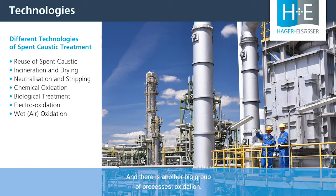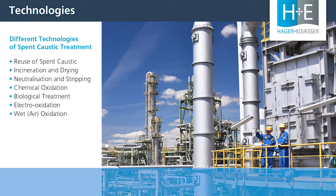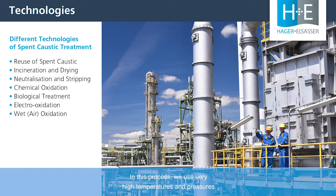Often, oxidation is still needed at the end to achieve a sufficiently good effluent quality. Another option is incineration, but this is only economically feasible if you have very high COD concentrations in your spent caustic. Another big group of processes is oxidation, which aims to destroy the COD and achieve a biodegradable or even disposable effluent. There is chemical oxidation, electro-oxidation, but the most common one is wet oxidation. In this process you use very high temperatures and pressures with air or oxygen as the oxidizing agent — if you use air, it's also called wet air oxidation.